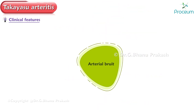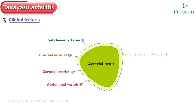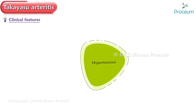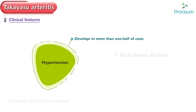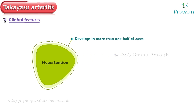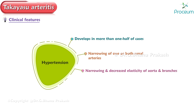Another feature is arterial bruits. In patients with stenosis, bruits are usually audible over the subclavian arteries, brachial arteries, carotid arteries, and abdominal vessels. Hypertension develops in more than one-half of cases due to narrowing of one or both renal arteries, or narrowing and decreased elasticity of the aorta and branches. Severe or malignant hypertension may occur.